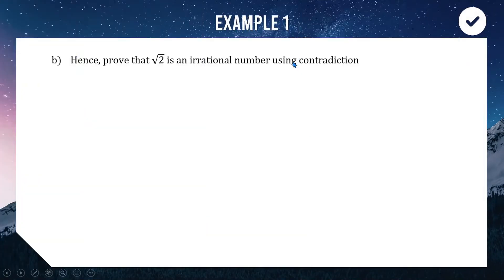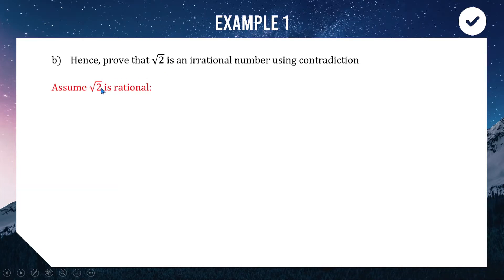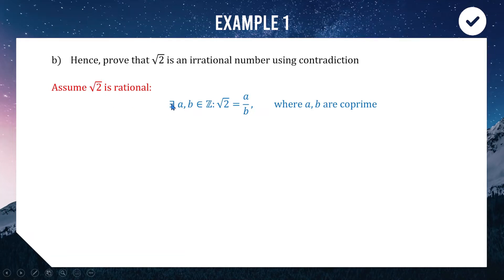Now we use that fact in part B: proving √2 is irrational using contradiction. We start by writing down the negation — assume √2 is a rational number — and try to show that makes no sense. We write: there exist integers a and b such that √2 = a/b.